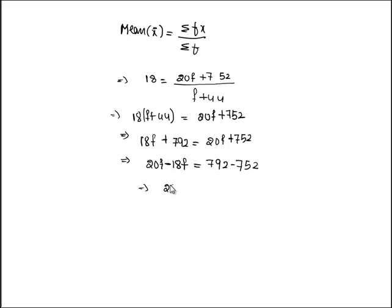Hence we get 2f equals 40. Therefore f equals 20. The missing frequency f is equal to 20.